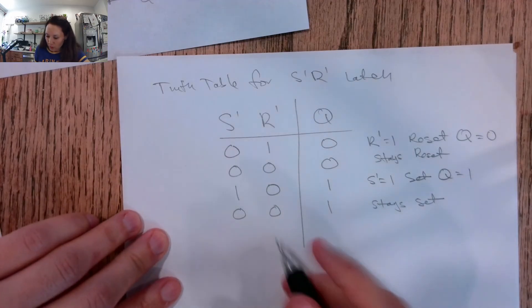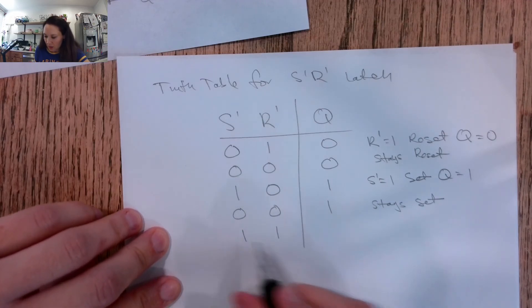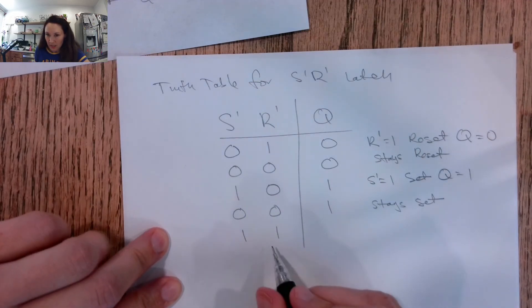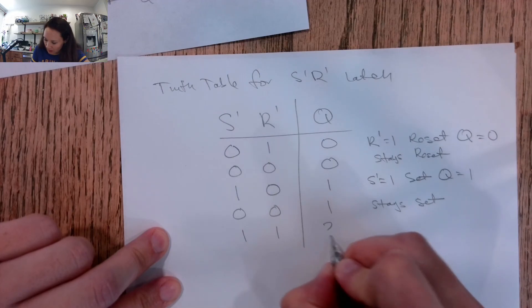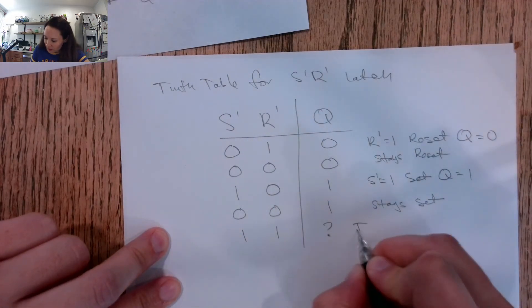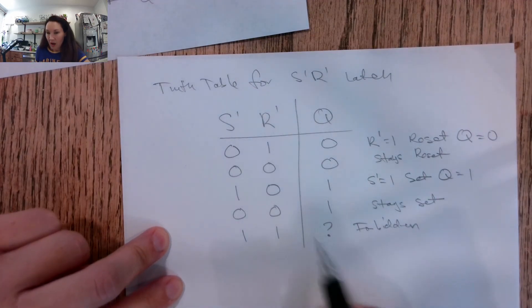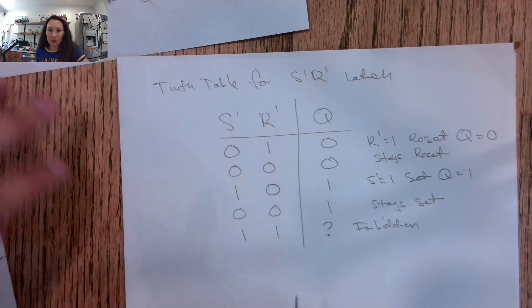Just like with our NOR implementation, if we have both S naught and R naught high, like we're trying to set and reset at the same time, this is going to be a metastable state. We call this a forbidden or metastable state because our output's not going to be reliable. So we just don't do it.